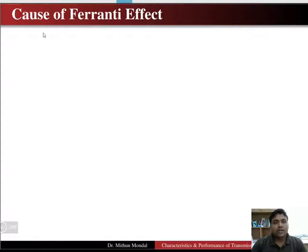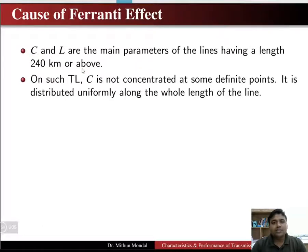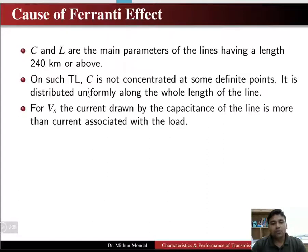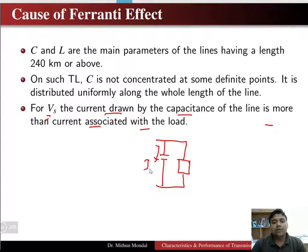What are the causes of the Ferranti effect? First, due to the presence of capacitance and inductance, which are the main parameters of the line. In long transmission lines of 40 kilometers and above, these parameters are not concentrated at a definite point but are uniformly distributed over the whole length. For a given sending end voltage, the current drawn by the capacitance of the line is more than the current associated with the load — so IC is greater than IL.